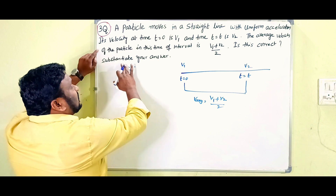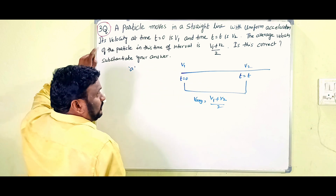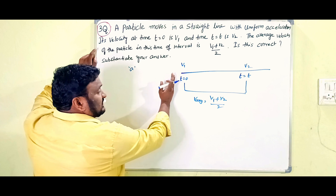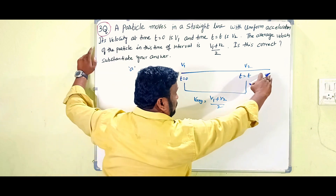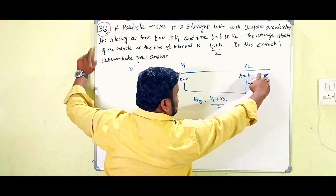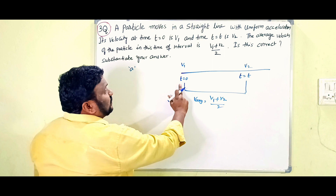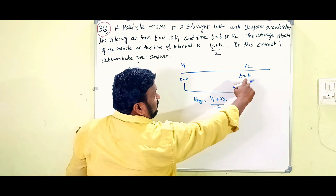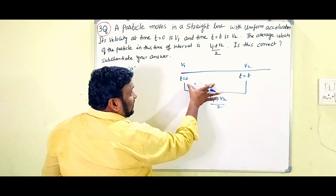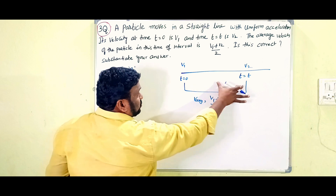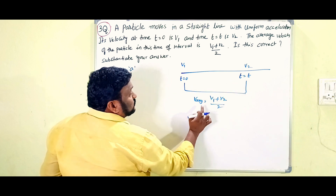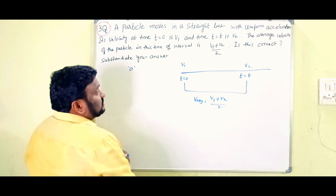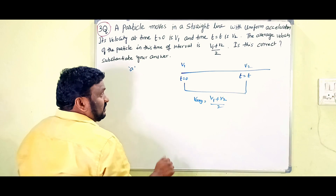The concept is: a particle is moving in a straight line with uniform acceleration. At time t equals zero its velocity is v1, and at time t equals T its velocity is v2. In this interval the average velocity of the particle is (v1 + v2)/2, and that is what we have to prove.